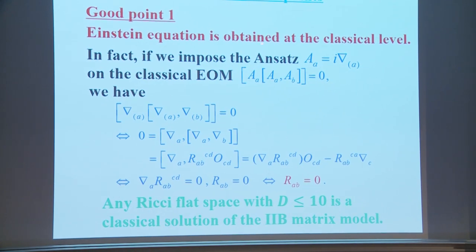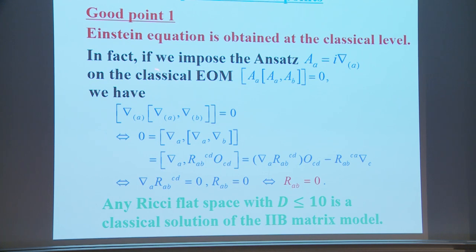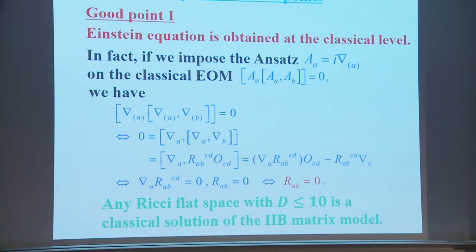The first good point is that the Einstein equation is obtained at the classical level. If we impose A_μ = i∇^(A) on the classical equation of motion, we obtain a condition. After removing Clebsch-Gordan coefficients, the commutator with ordinary indices A and B is the Riemann curvature contracted with the generator of the Lorentz group. This equation is equivalent to two conditions: one follows from the other by the Bianchi identity. The result is that this is equivalent to the Ricci-flat condition. Any Ricci-flat space with d ≤ 10 is a classical solution of the 2B matrix model.